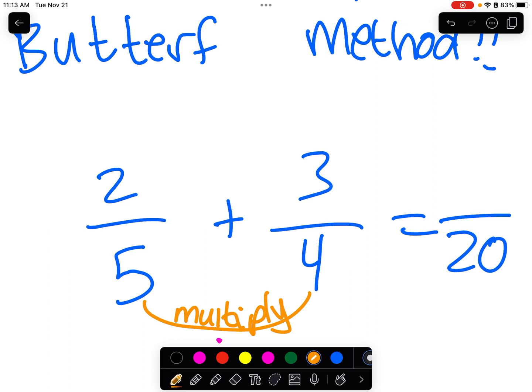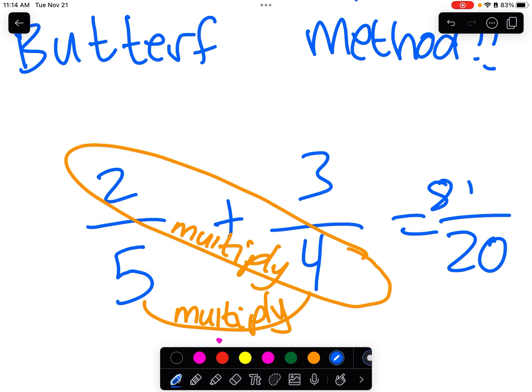Here's where it gets fun. We do a little crisscross. So we take the numerator of one of the fractions and the denominator of the other fraction. We multiply that. That gives us, in this case, 2 times 4. That gives us 8.